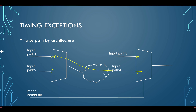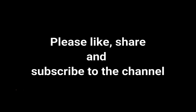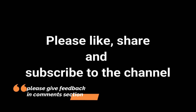That's all for this video. We hope we have given you sufficient examples to understand what a false path is. We will see other timing exceptions and more concepts in static timing analysis in further videos. Please like, share, and subscribe to the channel, and please don't forget to give your feedback in the comment section. Thank you.